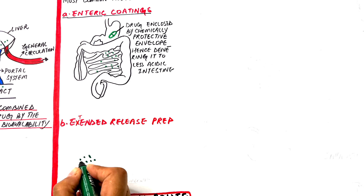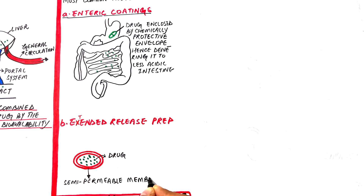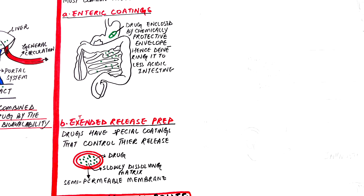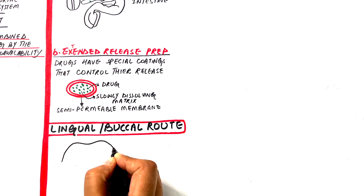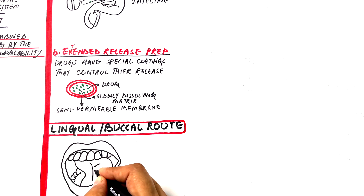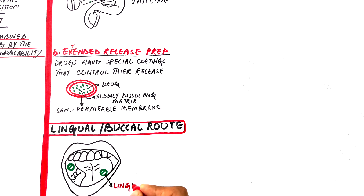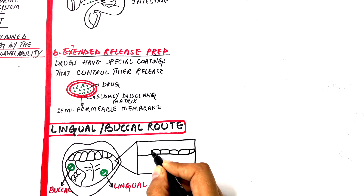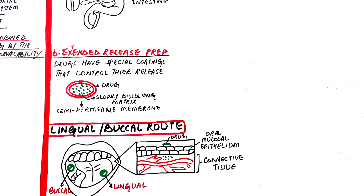Extended release preparations have special coatings or ingredients that control drug release, allowing for slower absorption and prolonged duration of drug action. They are beneficial for drugs with short half-lives, which eliminate from the body faster, so smaller controlled doses are administered instead of large frequent doses. The sublingual and buccal routes involve placement of drug under the tongue or between the cheek and gums respectively. In both routes, the drug is directly absorbed by the circulation under the mucosa, and both have advantages over the oral route in that they are rapidly absorbed and first-pass metabolism is avoided.